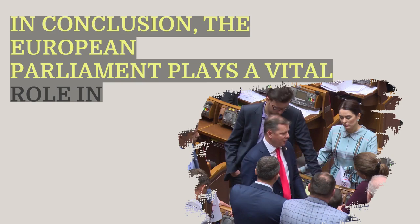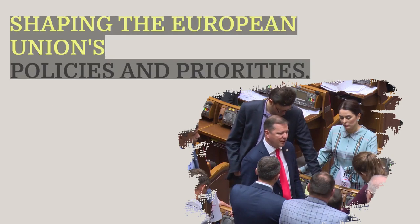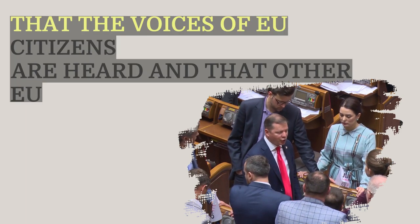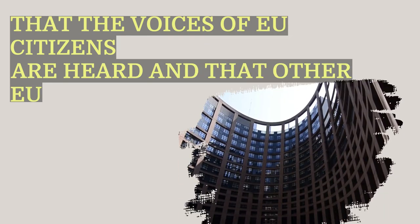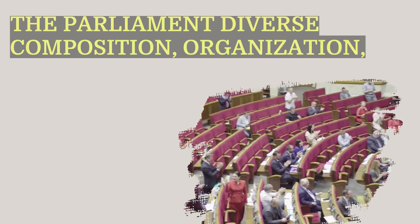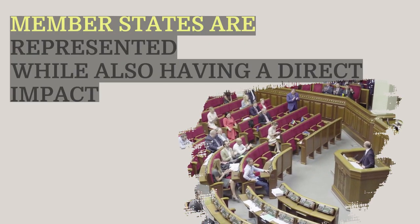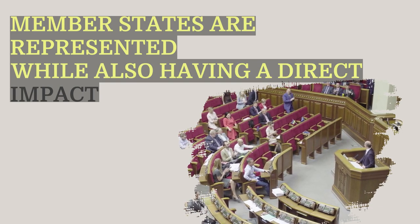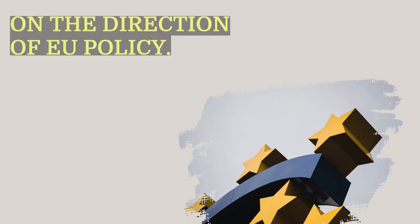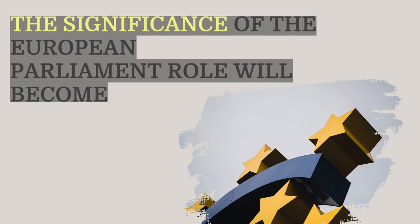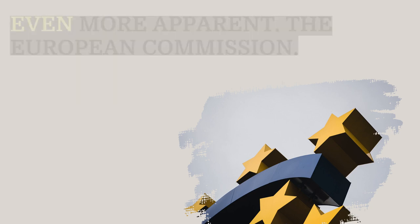In conclusion, the European Parliament plays a vital role in shaping the European Union's policies and priorities. Its legislative, budgetary, and supervisory powers ensure that the voices of EU citizens are heard and that other EU institutions are held accountable. The Parliament's diverse composition, organization, and electoral process guarantee that the interests of all member states are represented, while also having a direct impact on the direction of EU policy.